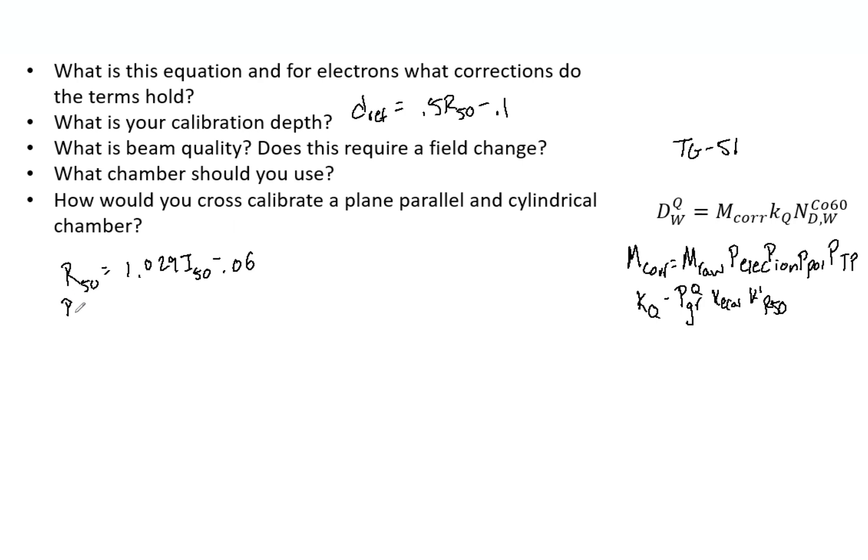But it's also important to know that if R-50 is greater than or equal to 8.5 cm, then the field size should move to 20 by 20. That is to maintain the lateral charged particle equilibrium. That mainly occurs for electrons greater than 20 MeV, but we really need to look at that number to verify we don't cross that.